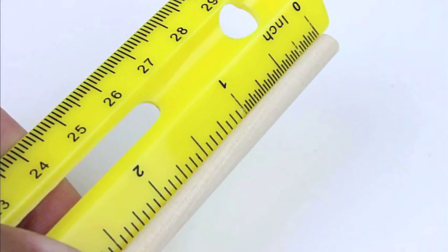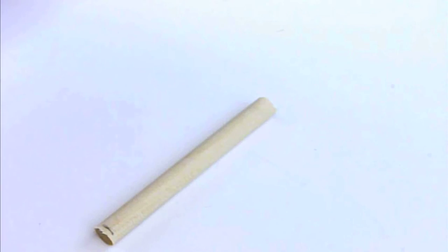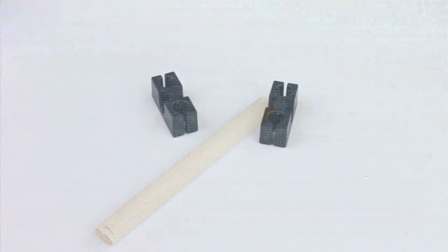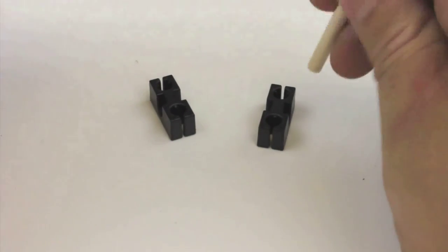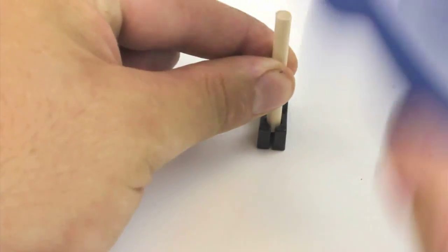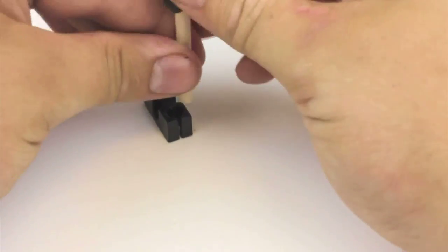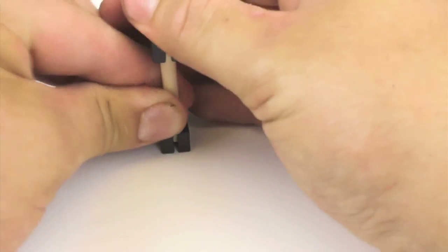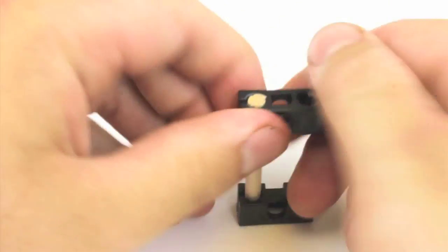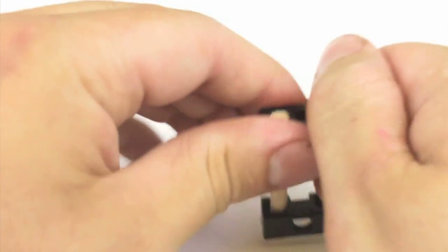The first step is to cut 4 sections of dowels that are each 55mm long which is about 2 inches. Take one of your cut dowels and place it into a perpendicular block. If it's a little hard to push in you can tap it with the easy cutters. Place the other end of the dowel into a perpendicular block. Make sure they're facing the same way then slide the perpendicular blocks down about 5mm which is about 3/16ths of an inch.